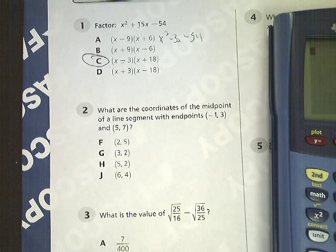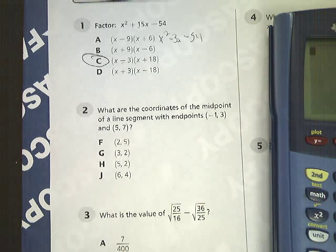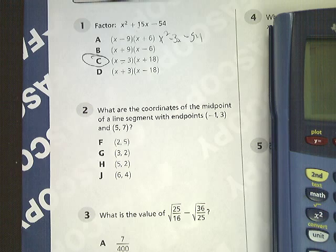This is the Tennessee End of Course Algebra 1. Question number 2 on the practice test. It says, what are the coordinates of the midpoint of a line segment with endpoints negative 1 and 3 and 5 and 7?